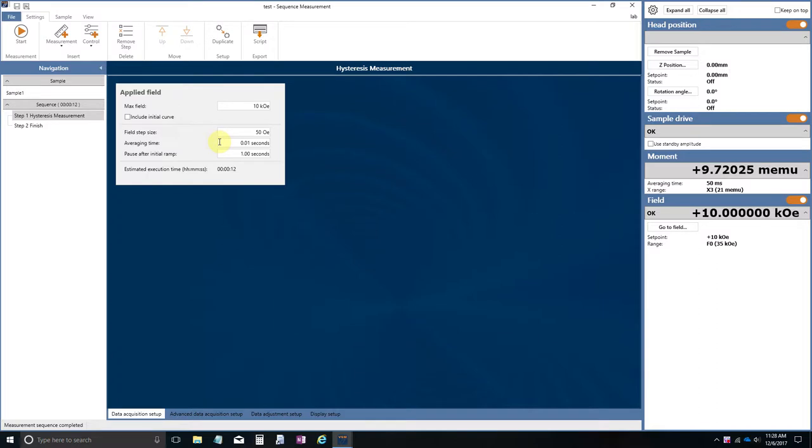So what I'm going to do here is set up a hysteresis loop measurement. This is on a magnetic tape sample. It has a saturation moment of just a little less than 10 milli EMU. I'm just going to run it over a plus or minus 10 kilo ersted field range in 50 ersted field steps.